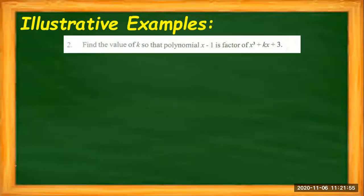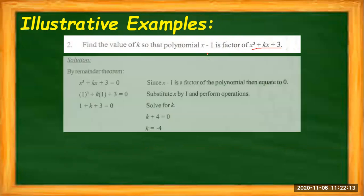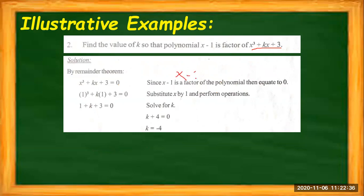Another example: we are going to find the value of K so that the polynomial X minus 1 is a factor of X³ + KX + 3. We need to make X minus 1 a factor of X³ + KX + 3. Using direct substitution, since X − 1 is a factor, we equate it to 0: X − 1 = 0, so X = 1. That means we substitute positive 1 for all variables X. So we have: 1³ + K(1) + 3 = 0. We leave K since that is what we are looking for.